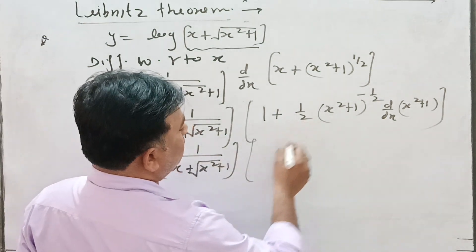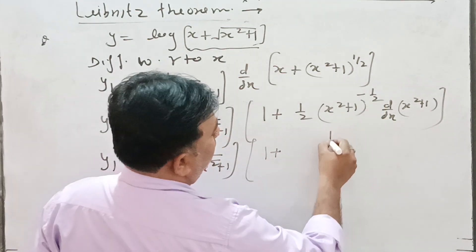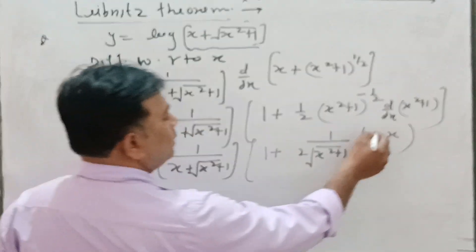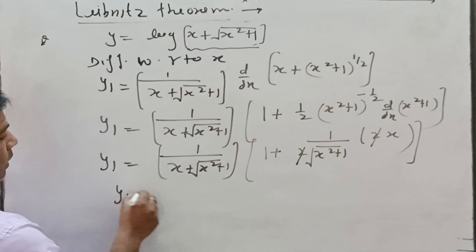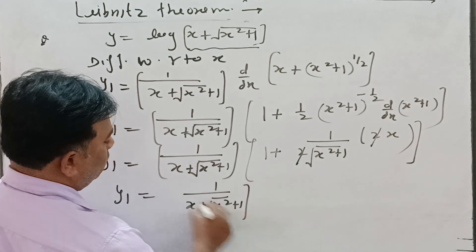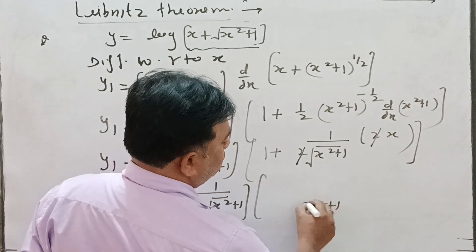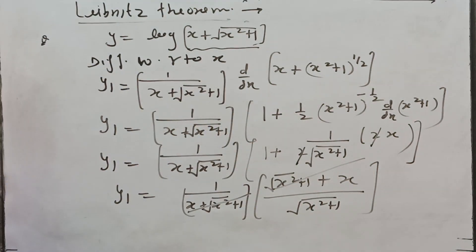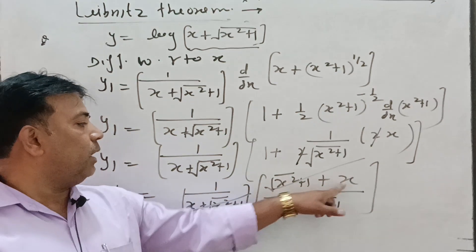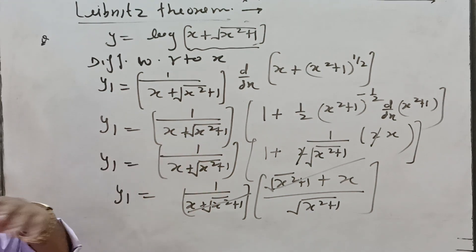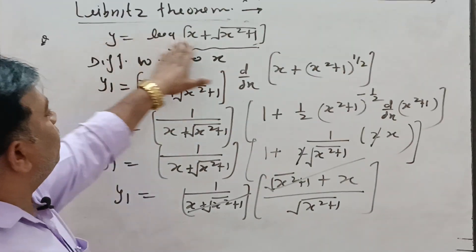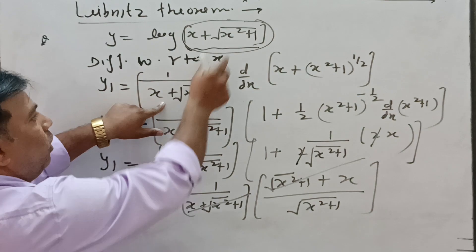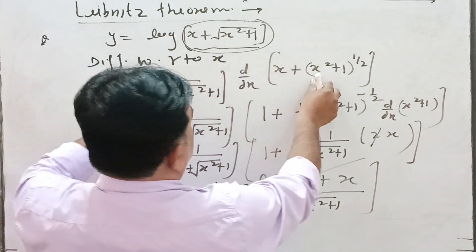Simplifying further: taking LCM of (x + √(x²+1)), the numerator becomes (√(x²+1) + x), which cancels with the denominator (x + √(x²+1)). So y₁ simplifies to 1/√(x²+1). Let me repeat: the terms (x + √(x²+1)) in numerator and denominator cancel out completely.